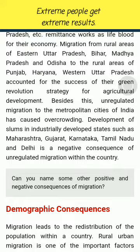Besides this, unregulated migration to the metropolitan cities of India has caused overcrowding. Development of slums in industrially developed states such as Maharashtra, Gujarat, Karnataka, Tamil Nadu and Delhi is a negative consequence of unregulated migration within the country.